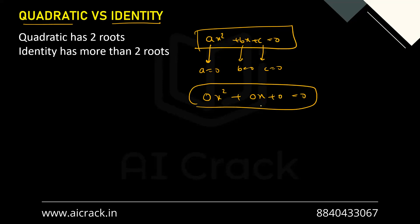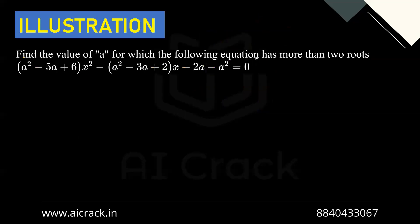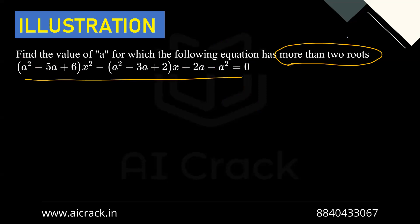You might be wondering what kind of questions can be framed. There can be statements like: this is a quadratic equation and it has more than two roots — in that case we have to assume that all the coefficients and constant are equal to zero. Let's look at an illustration: find the value of a for which the following equation has more than two roots. That basically means it's an identity.